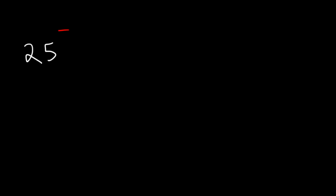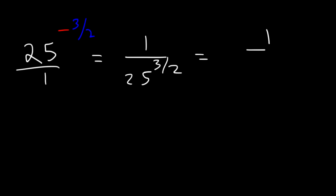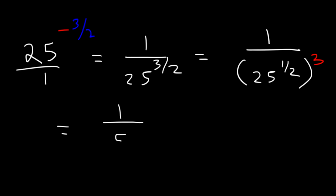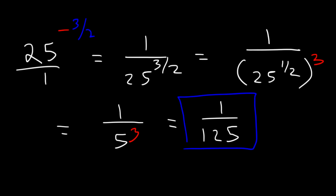Now what would you do if we have a negative exponent? Let's say 25 raised to the negative 3 over 2. If you have a negative exponent, you can make it positive by putting the 25 in the denominator. First, we need to find the square root of 25, then raise it to the 3rd power. The square root of 25 is 5, and 5 raised to the 3rd power is 5 times 5 times 5, which is 125. So the final answer is 1 divided by 125.